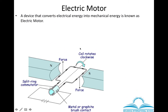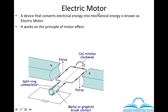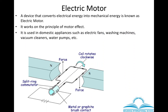Electric motor: when you pass current through it, the motor starts moving. So electric energy is being converted into mechanical energy. This kind of device is called an electric motor. Its working principle is motor effect, and it is used in domestic appliances such as electric fan, washing machine, vacuum cleaner, water pump, etc., where they produce rotation.